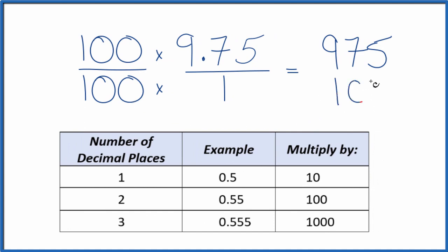100 times 1 is 100. And now we have our fraction. The decimal 9.75 equals the fraction 975 over 100.